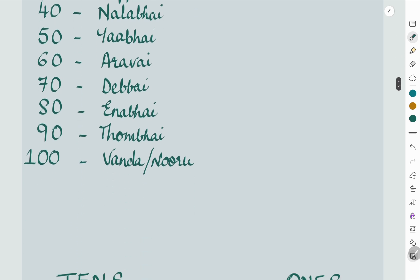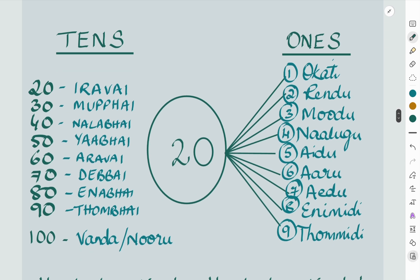Now we shall see how to join the tens to the ones to get 21 to 99. Just as in English '20 and 1 is 21', in Telugu 20 is 'irabai' and 1 is 'okati', so 21 is 'irabai okati', 22 is 'irabai rendu', and so on up to 29.